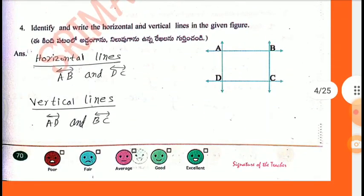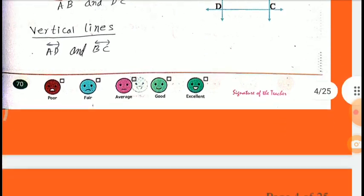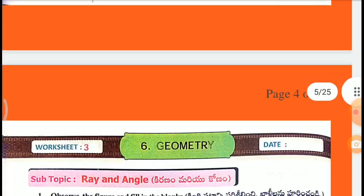Fourth one: Identify and write the horizontal and vertical lines in the given figure. Horizontal lines are AB and DC. Vertical lines are AD and BC.